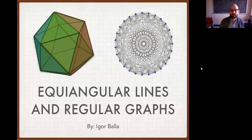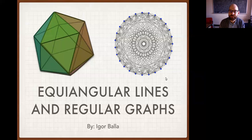Hi, and welcome to Codex. Our speaker today is Igor Bala, who is a postdoctoral researcher at the Hebrew University of Jerusalem. Dr. Bala earned his PhD from ETH Zurich in 2019 under the direction of Benny Sudikov. His research involves problems at the intersection of combinatorics, linear algebra, and geometry. Today, he will tell us about equiangular lines and regular graphs.